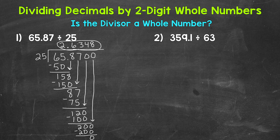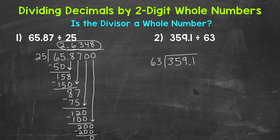Let's move on to number two, where we have 359 and one-tenth divided by 63. Let's set this problem up. 359 and one-tenth is the dividend, the number we are dividing. 63 is the divisor. Is the divisor a whole number? Yes — 63 is a whole number, so we can bring the decimal straight up into the answer.